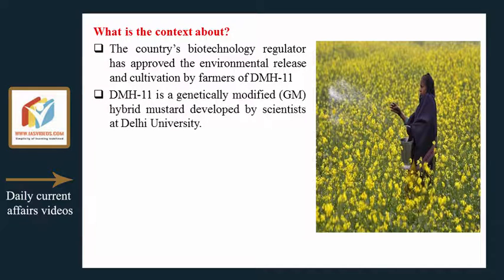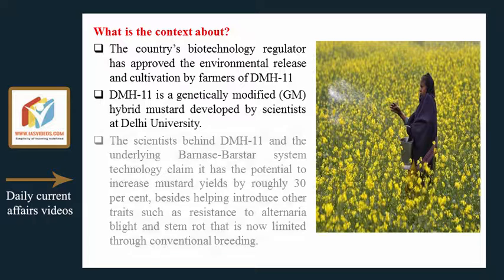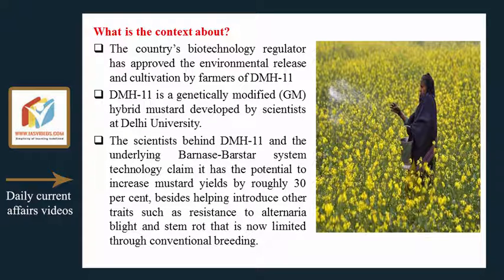DMH-11 is a genetically modified hybrid mustard developed by scientists at Delhi University. The scientists behind DMH-11 and the underlying barnase-barstar system technology claim it has the potential to increase mustard yields by roughly 30 percent, besides helping introduce traits such as resistance to Alternaria blight and stem rot, which are currently limited through conventional breeding.